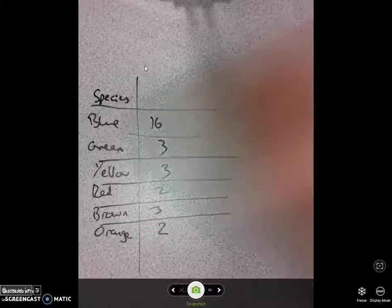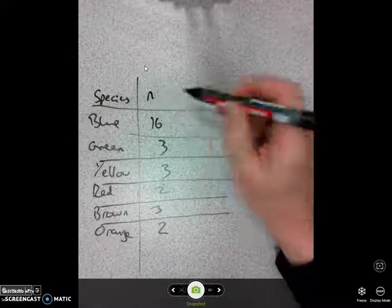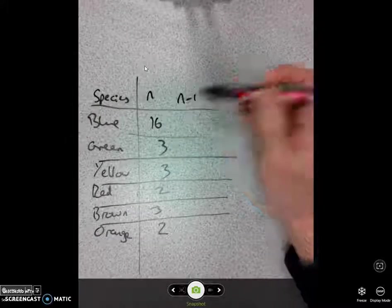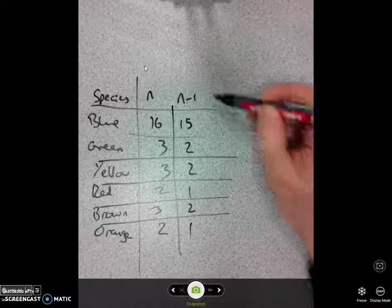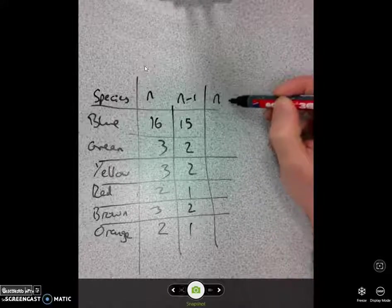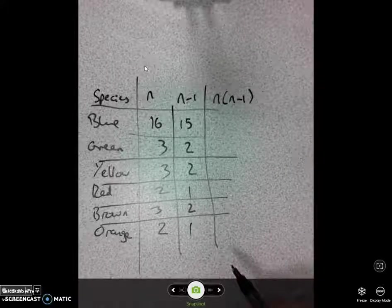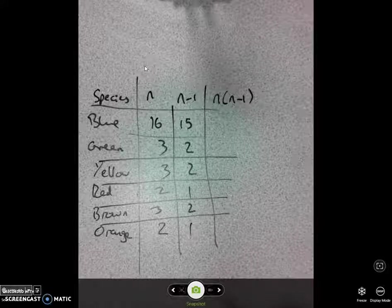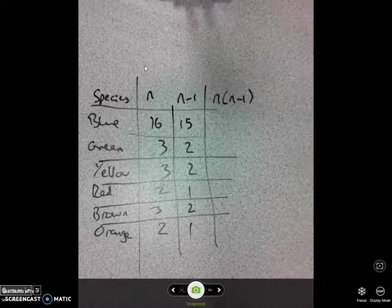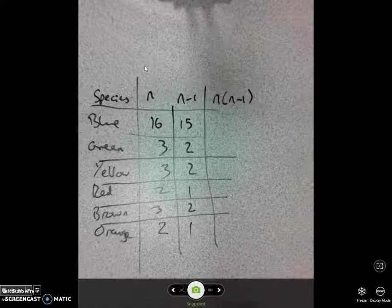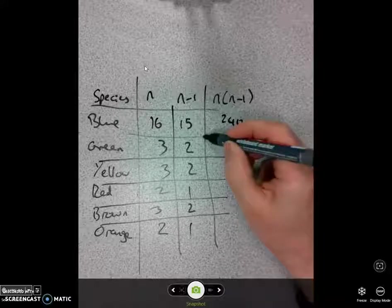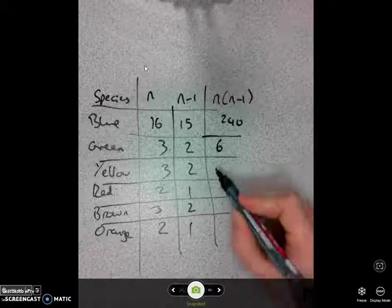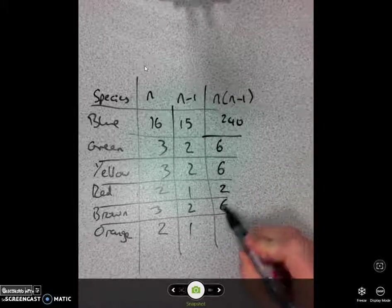Right, remember what this little number is in each case, these are the values of n, so n minus 1 is pretty easy. It's 15, 2, 2, 1, 2, 1. So now I can do n, n minus 1, so 16 times by 15. I'm not going to do that in my head. I am going to grab a calculator. There's no prizes for doing mental arithmetic in this one, so 16 times by 15, that's 240. 3 times by 2, and there we go.